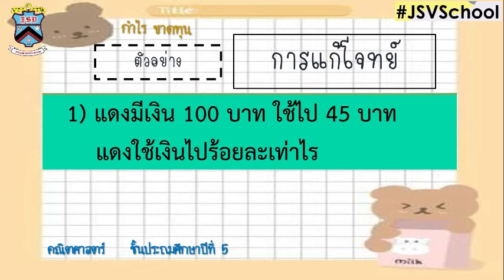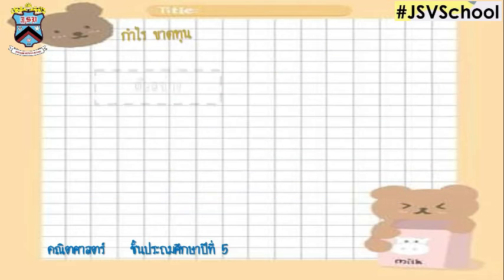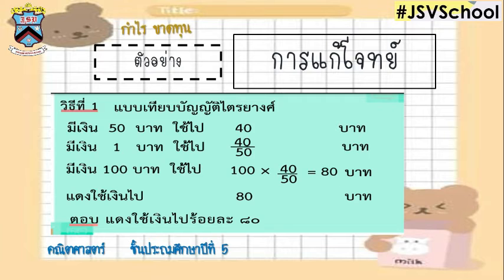การแก้โจทย์ปัญหาเกี่ยวกับปัญหาอัตราส่วนนะคะ เป็นการทบทวนนะคะ การแก้โจทย์ปัญหาจะมี 4 ขั้นตอนนะคะทุกคน ขั้นตอนแรกทำความเข้าใจโจทย์ วางแผน ลงมือทำ และตรวจสอบความสมเหตุสมผลนะคะ เดี๋ยวเรามาลองดูตัวอย่างต่อไปนี้ก่อนเลยนะคะ อย่างเช่นแดงมีเงิน 100 บาท ใช้ไป 45 บาท แดงจะใช้เงินไป 100 บาทเท่าไหร่